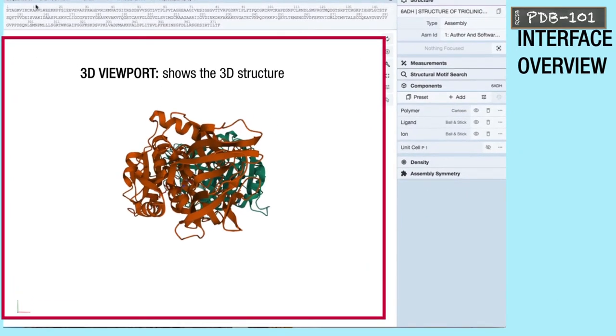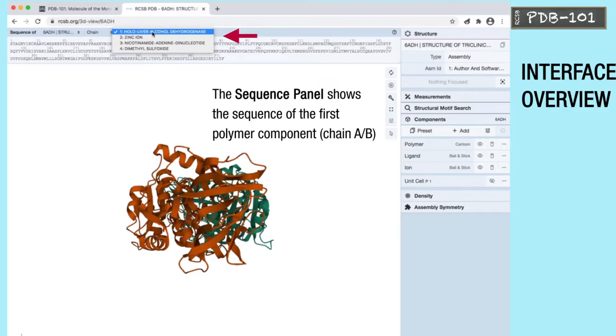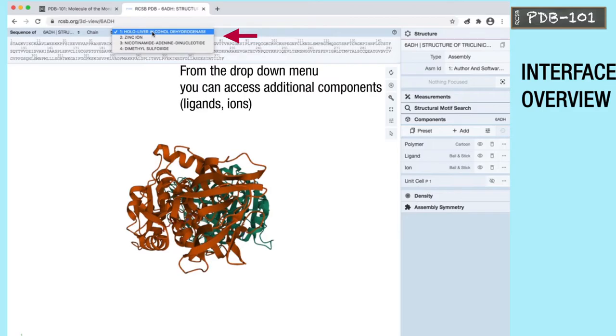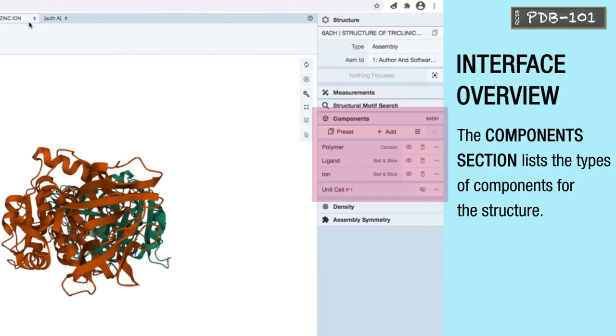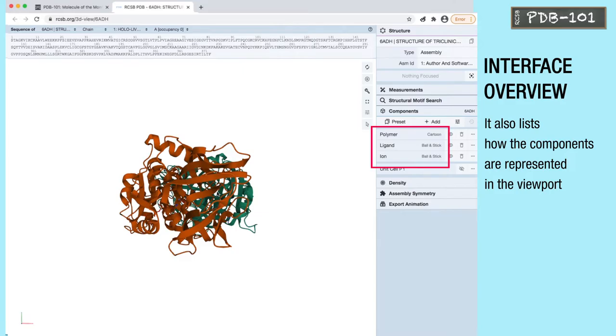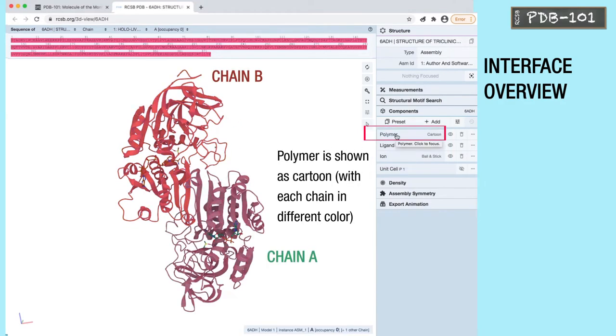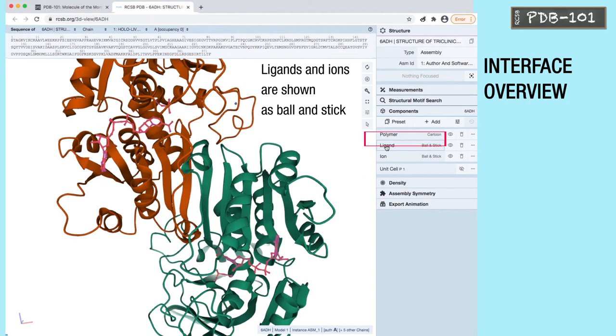The 3D viewport shows the 3D structure. The sequence panel shows the sequence of the first polymer component. From the drop-down menu, you can access additional components such as ligands and ions. The components section lists the type of components for the structure: polymer, ligands, and ions. It also lists how the components are currently represented in the viewport. Polymer is shown as cartoon with each chain in different color. Ligands and ions are shown in ball and stick representations.